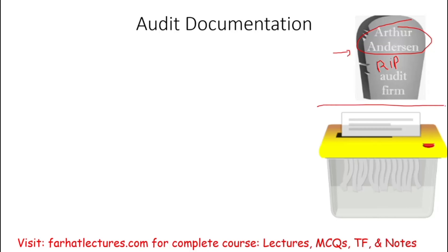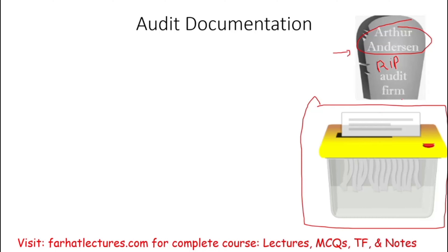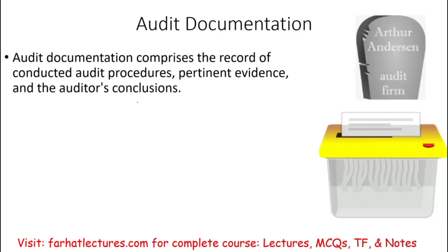So why do I have this shredder on the screen? Because when Arthur Anderson were accused of committing fraud with Enron, what did they start to do? They started to shred the audit documentation. Therefore, audit documentation is a very important topic. If those audit procedures are gone, how do we know how you came up with that conclusion? If you're shredding your paperwork, you're trying to hide something.